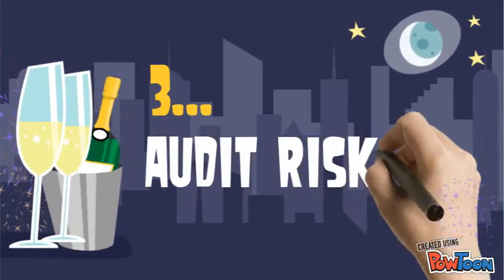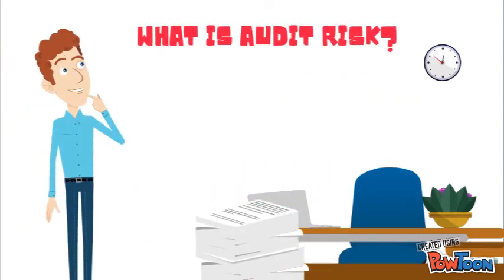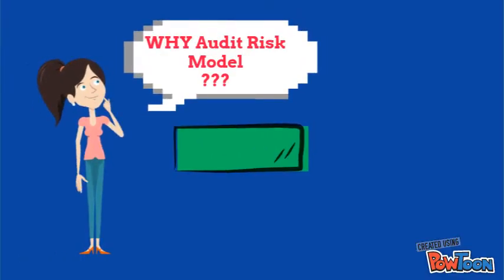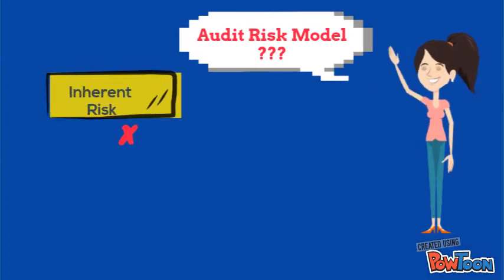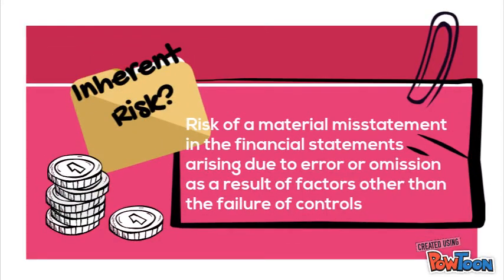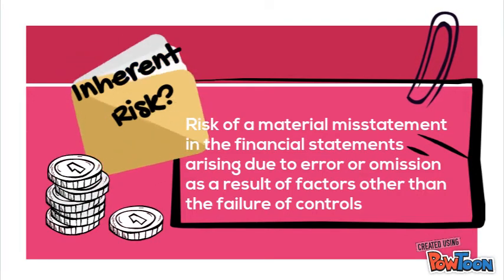The third subtopic is Audit Risk. What is audit risk? Audit risk is the risk that an auditor expresses an inappropriate opinion on the financial statements, such as failing to emphasize significant matters in the audit report. The audit risk model equals inherent risk times control risk times detection risk. Inherent risk is a risk of a material misstatement in the financial statements arising due to error or omission other than failure of controls. For example, when an entity has a complex structure of transactions, the chances of inherent risk are high.